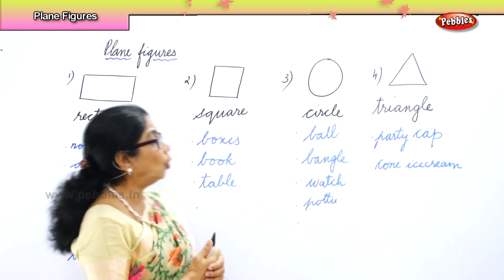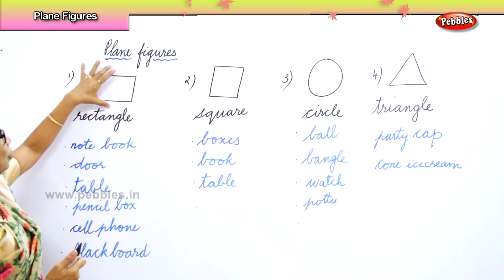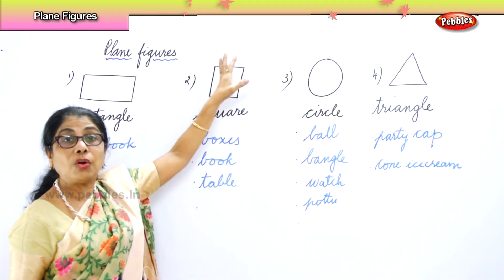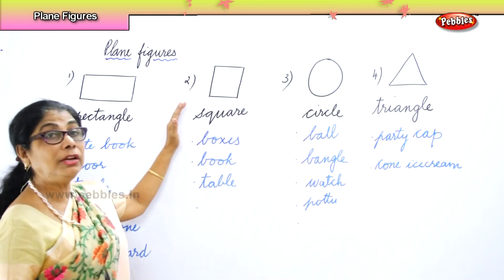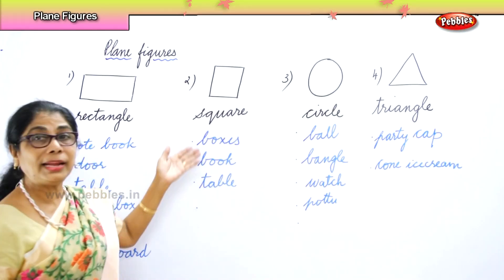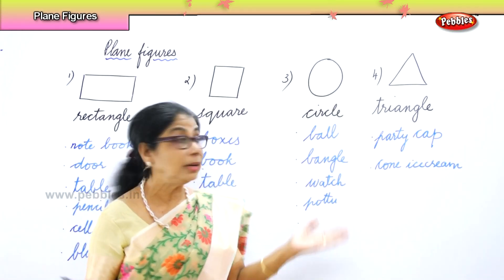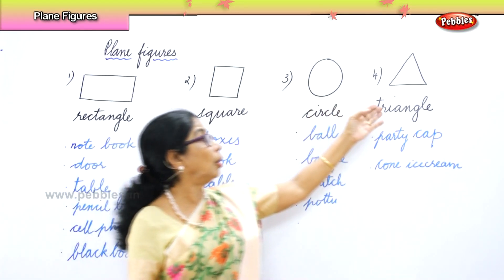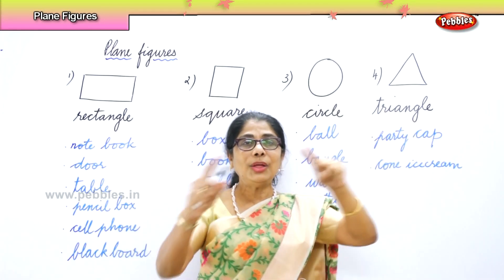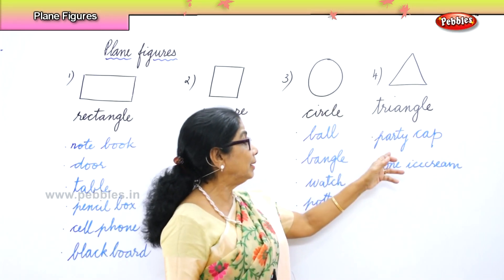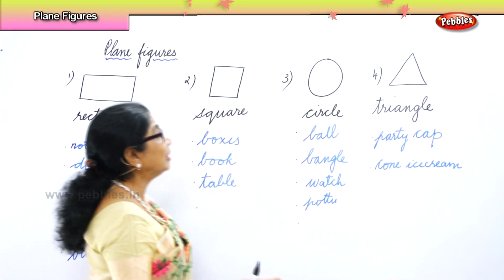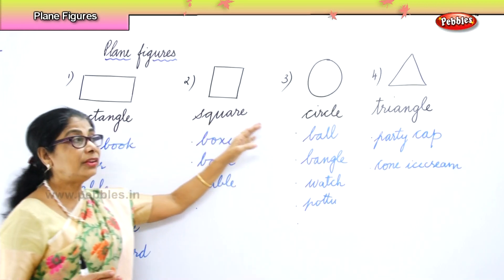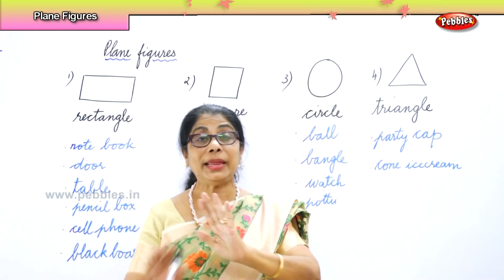Now, let us look at all four shapes that we learned today. Rectangle — got two long sides and two short sides — your notebook, blackboard, and so forth. Square — all four sides are equal — sometimes a book, a table, or your box can be square shape. Circle — the football, the ball you have in the playground, your bangle, a wall clock. Triangle — you normally find it with a party cap or cone. These are the four plane figures you need to remember: rectangle, square, circle, and triangle.